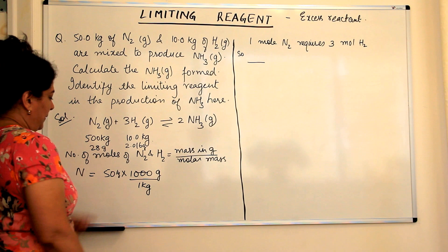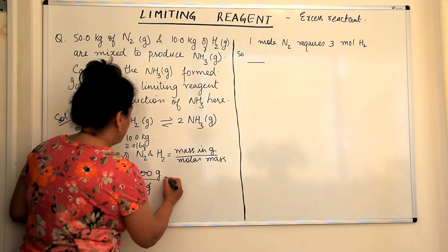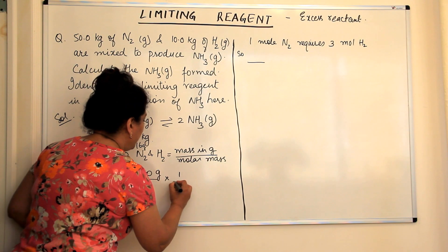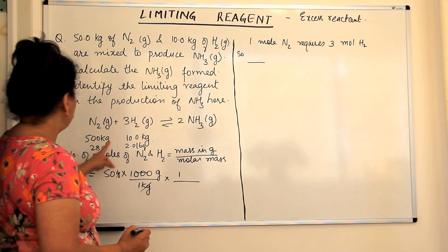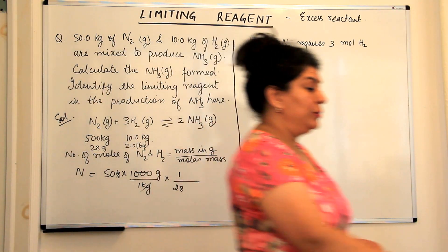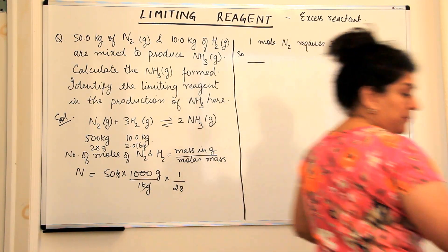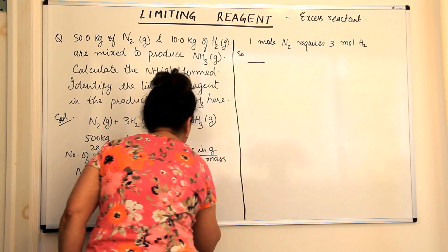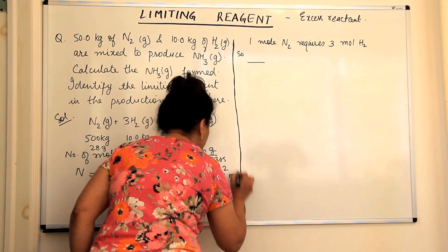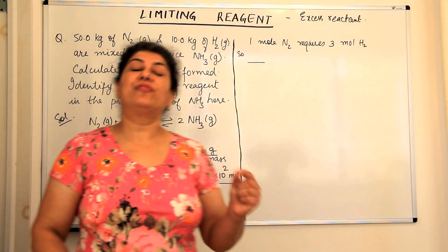We are using the unit conversion factor — kg cancels out to convert it into grams. This mass of nitrogen in grams is then divided by its molar mass of 28. This comes out to be equal to 17.86 × 10² moles. This is the number of moles of nitrogen that 50 kg of nitrogen represents.